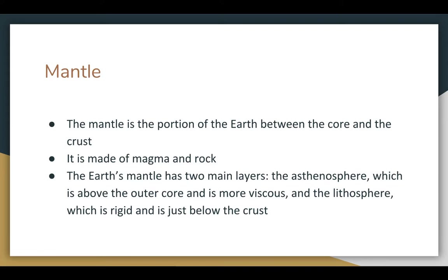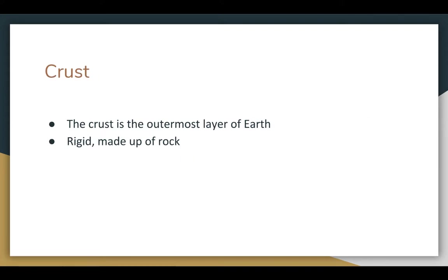The mantle is made of magma and rock, and some parts of it are more liquid and some are more solid. The Earth's mantle has two main layers: the asthenosphere, which is above the outer core and is more liquidy, and the lithosphere, which is rigid and is just below the crust. That brings us to the crust, which is the outermost layer of Earth — it's what we walk on every day, and it's rigid and made up of rock.